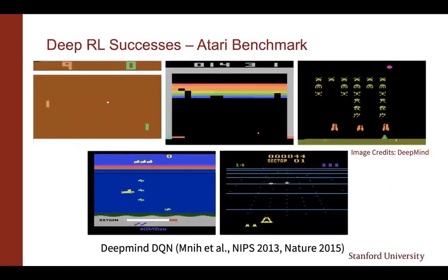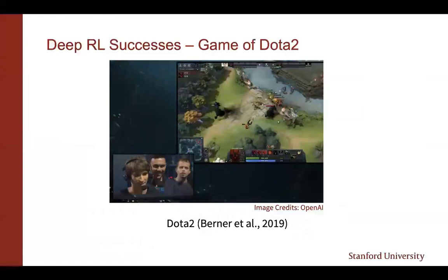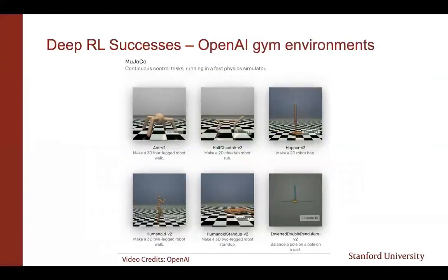Deep reinforcement learning has been successful in recent years in many different areas, including Atari games, where we trained an agent that can play with raw images and perform at roughly human level. Another success story is the game of Go, in which the AlphaGo algorithm beat a human champion. Dota 2 is another example. We've also successfully applied deep RL in many simulated environments built on top of physics engines like MuJoCo.